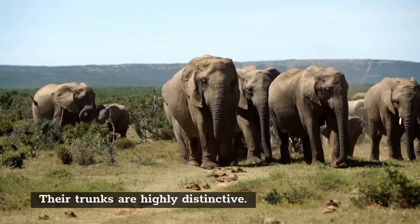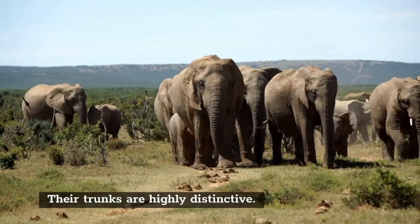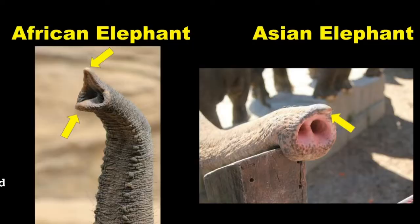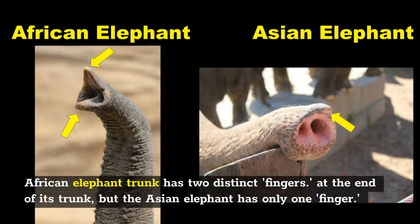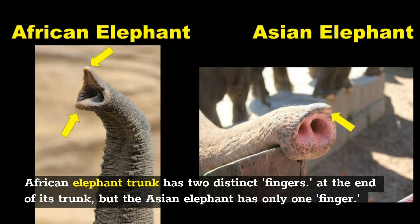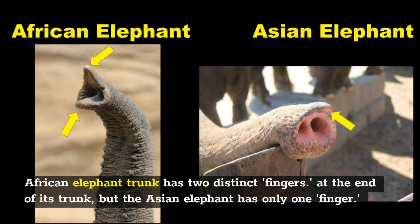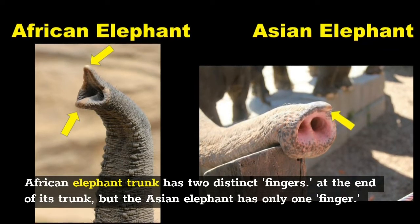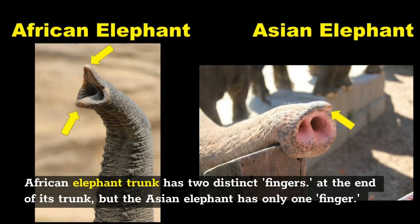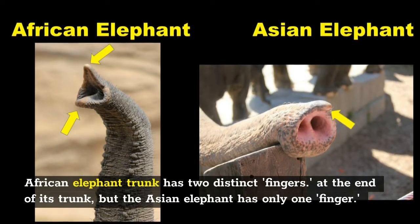Their trunks are highly distinctive. The African elephant trunk has two distinct fingers at the end of its trunk, but the Asian elephant has only one finger.